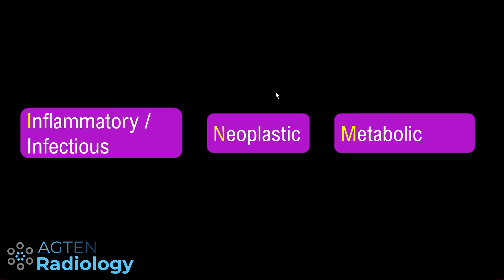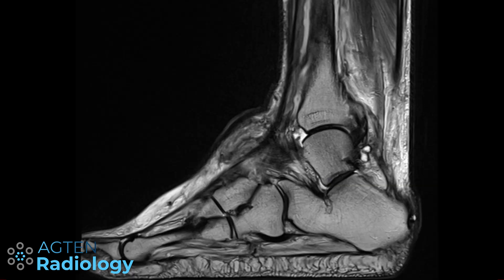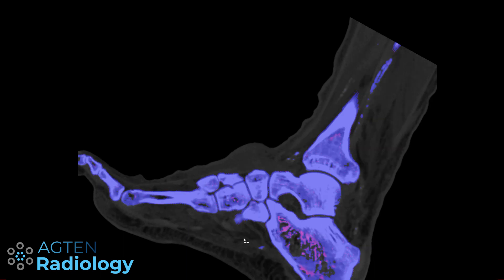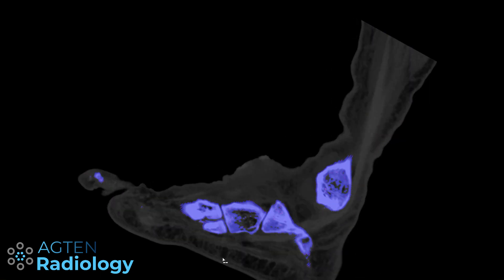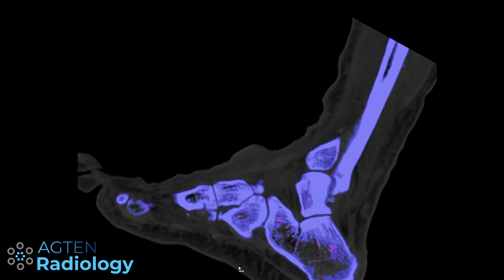In summary, the leading differentials were: a fibrotic process that is superinfected, atypical gout (primarily because of the low T2 signal), or amyloid deposition. A tumor or sarcoma was moved to the background. We recommended dual energy CT to rule out gout, and the dual energy CT was completely normal in this regard — no urate depositions at this location, though there were deposits elsewhere. There were no other hints of amyloid deposition, so we ultimately recommended biopsy.